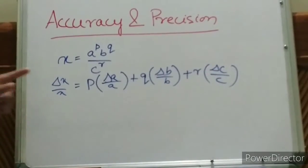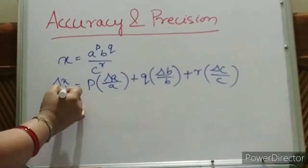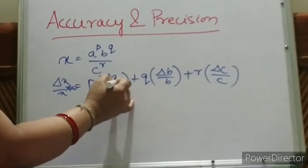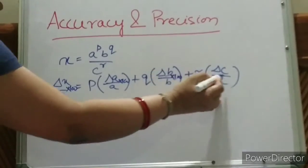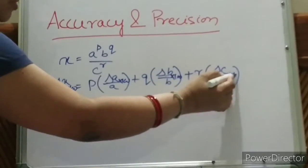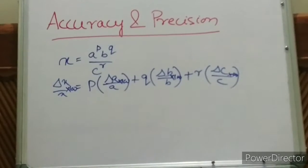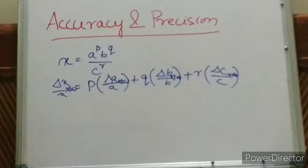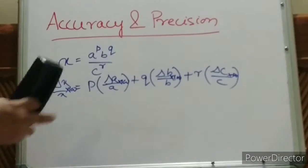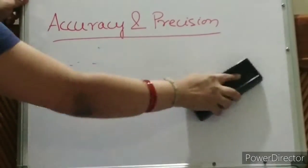And how to calculate the percentage error? Simply we will multiply by 100 — here also 100, here also 100, here also 100. This formula we have discussed. Now let us discuss one example to visualize this formula. Calculate the percentage of error.